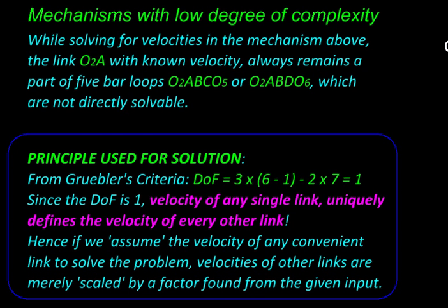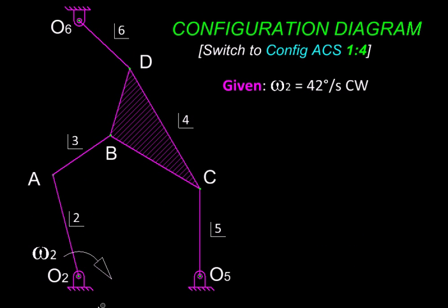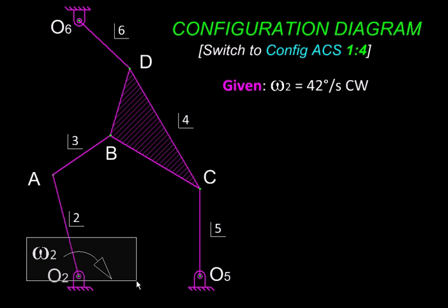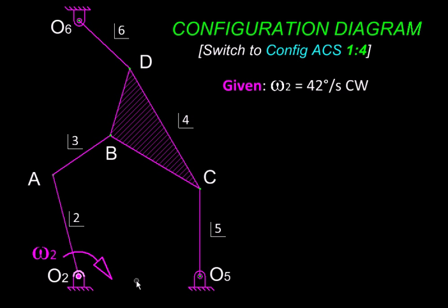So if we double this input velocity, then all other velocities will get doubled. If we reverse this input velocity, it will reverse all other velocities in the mechanism. This unique or almost rigid relationship between velocities gives us the freedom to ignore this input, which is very inconvenient. This is not helping us to solve the problem.